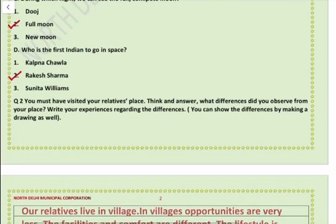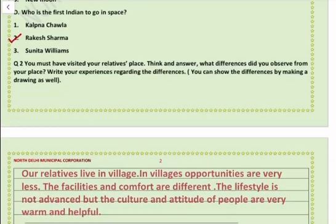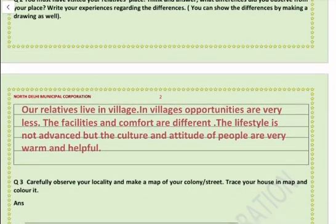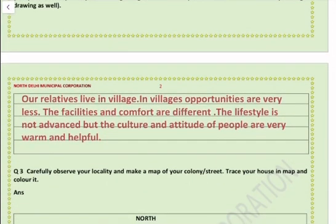Question number 2: You must have visited your relatives' place. Think and answer — what difference did you observe from your place? Write your experience regarding the differences. For example, my relatives live in a village. Our relatives live in a village. In villages opportunities are very less. The facilities and comfort are different. The lifestyle is not advanced. But the culture and attitude of people are very warm and helpful.